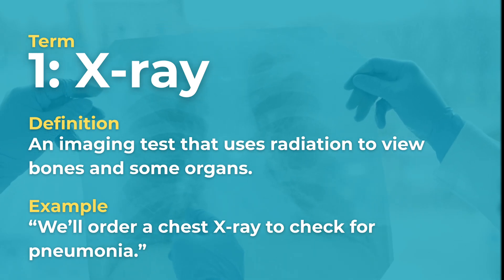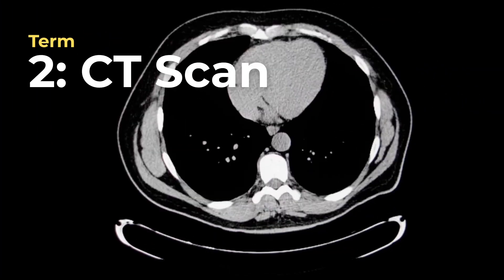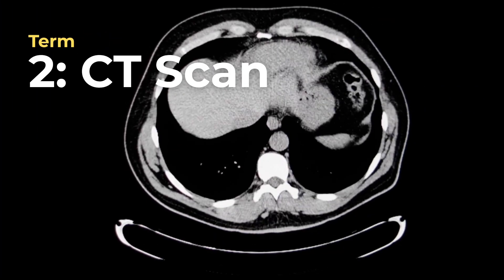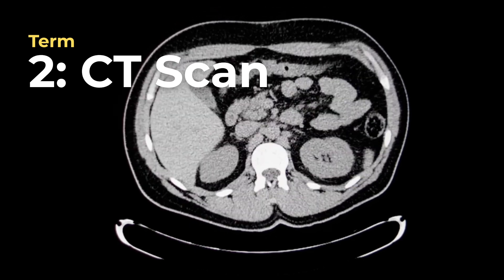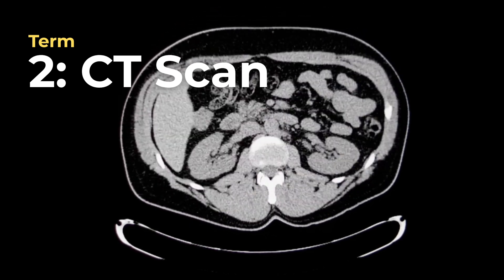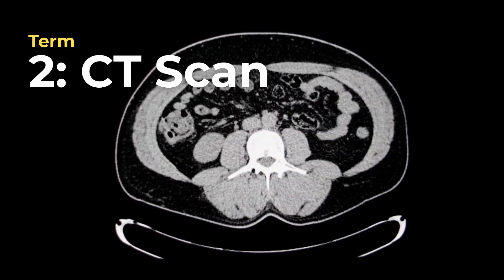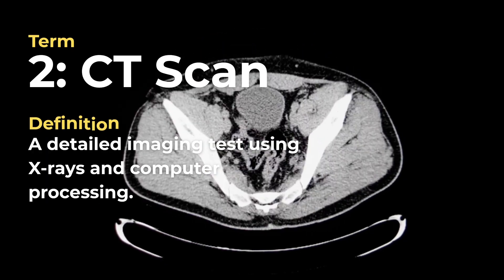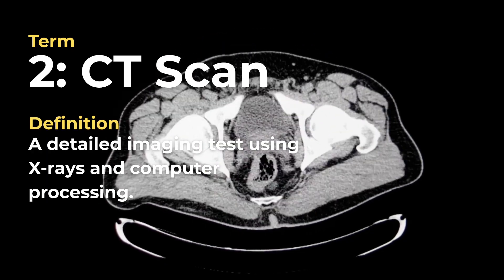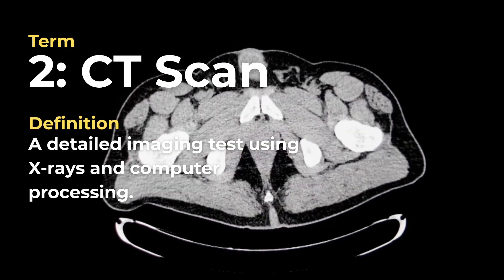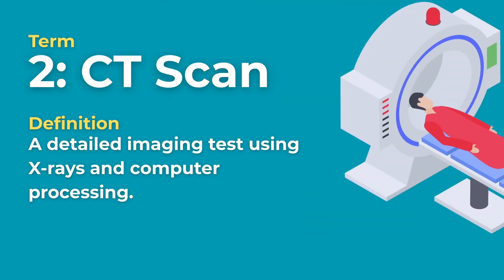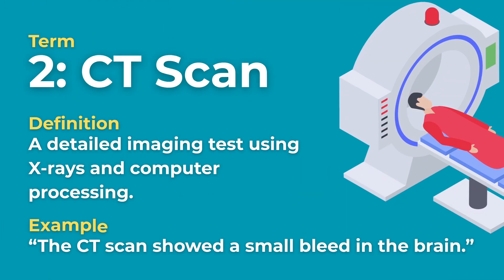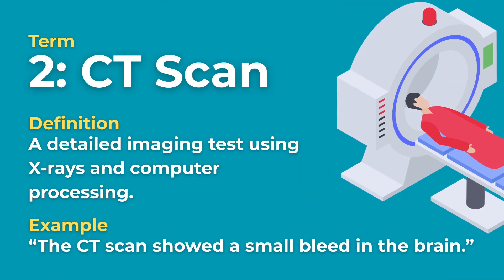Moving on to term number two — CT scan. This is a detailed imaging test using X-rays and computer processing. Example: The CT scan showed a small bleed in the brain.